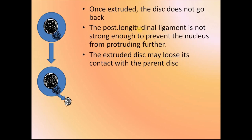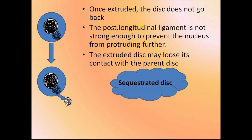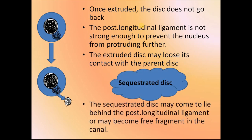Once the disc is extruded, the disc does not go back. The posterior longitudinal ligament is not strong enough to prevent the nucleus from protruding further. This is called the sequestrated disc. The sequestrated disc may come to lie behind the posterior longitudinal ligament or may become a free fragment in the canal.